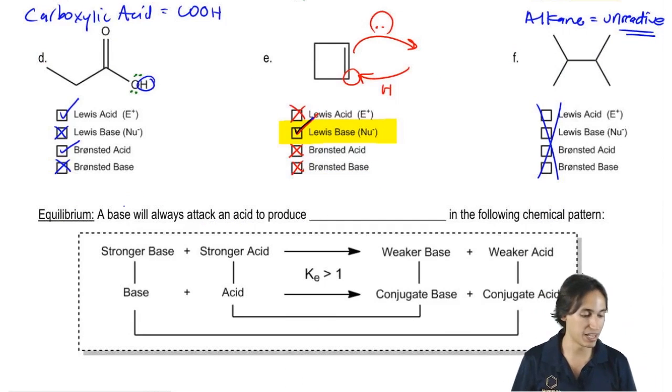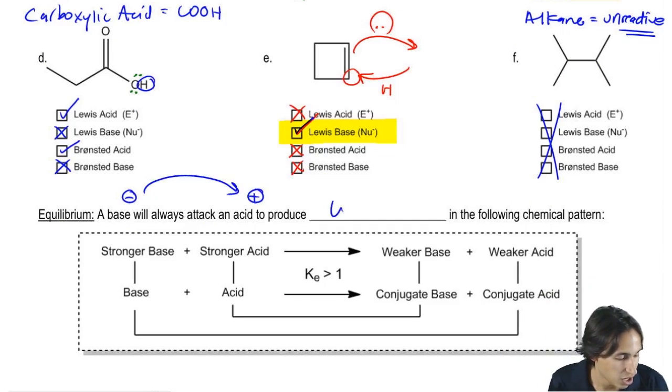So notice I'm already telling you what's going to happen. A base, negative, will attack an acid, positive, to produce conjugates—scary word, remember that from GenChem—conjugates in the following chemical pattern.